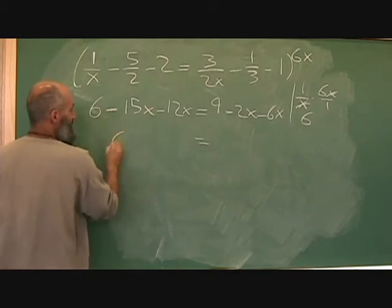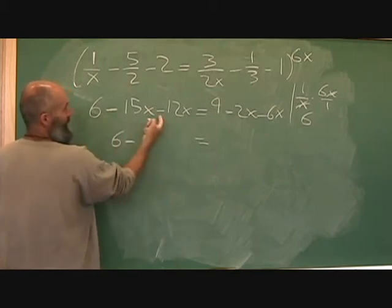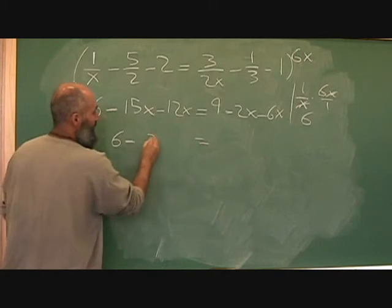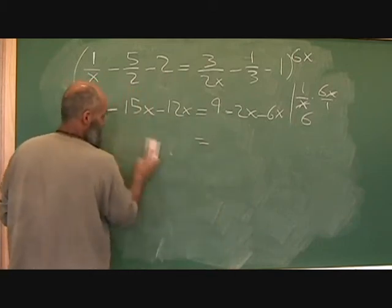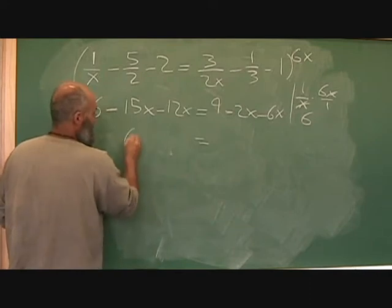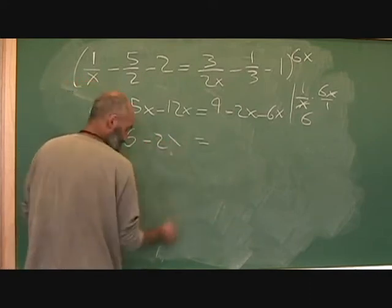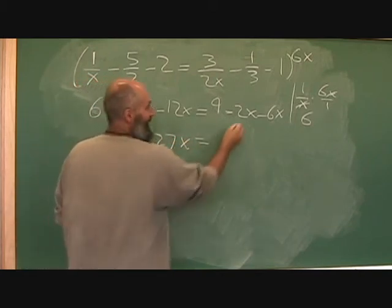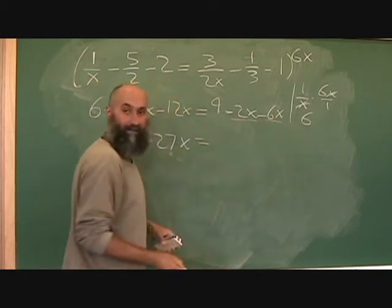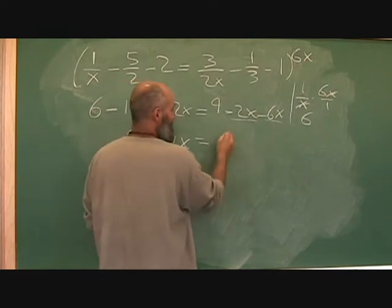So you've got 6 minus negative 15x minus 12x is negative 27x. 6 minus 27x. And negative 2x minus 2x minus 6x is negative 8x, so 9 minus 8x.